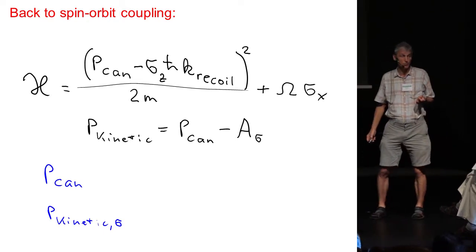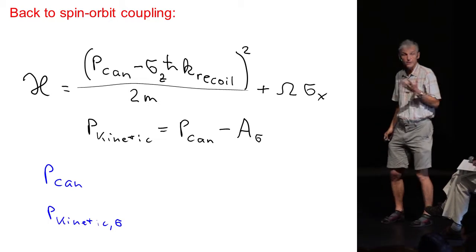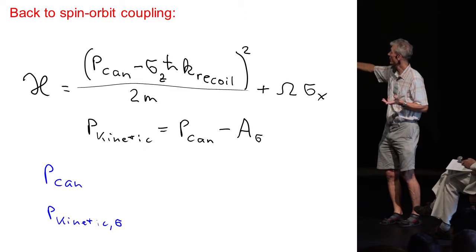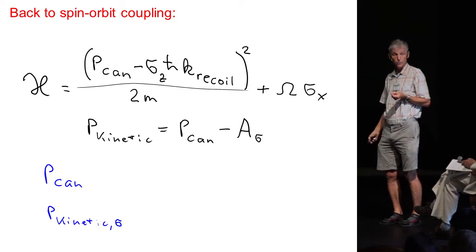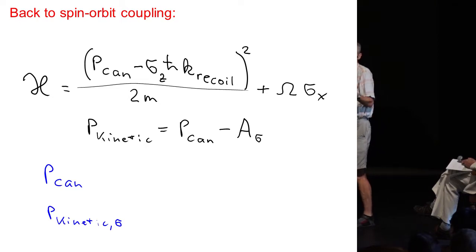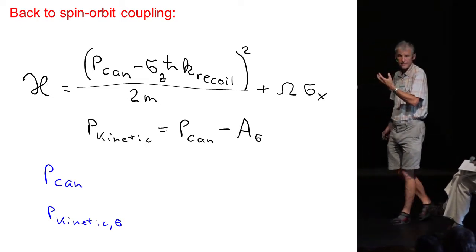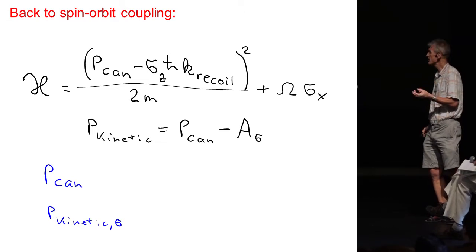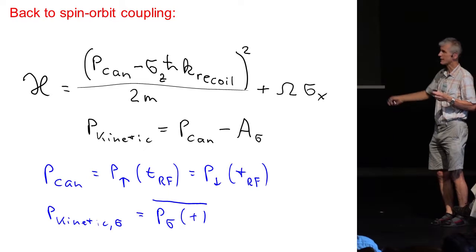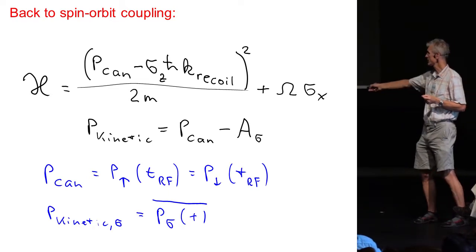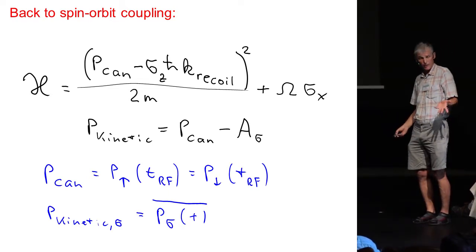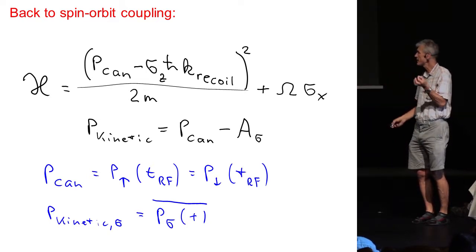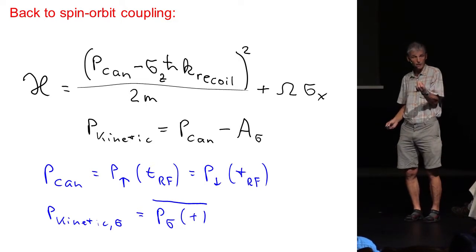Whenever you introduce a gauge potential, you have actually two momenta. You have a kinetic momentum, and you have a canonical momentum, and they differ by the gauge potential. It is very pedagogical for this shaking scheme that you can directly associate a physical quantity which can be measured with both the canonical and the kinetic momentum. The kinetic momentum is nothing else than the time-averaged momentum, but the canonical momentum is the momentary momentum at the moment of the RF transfer.